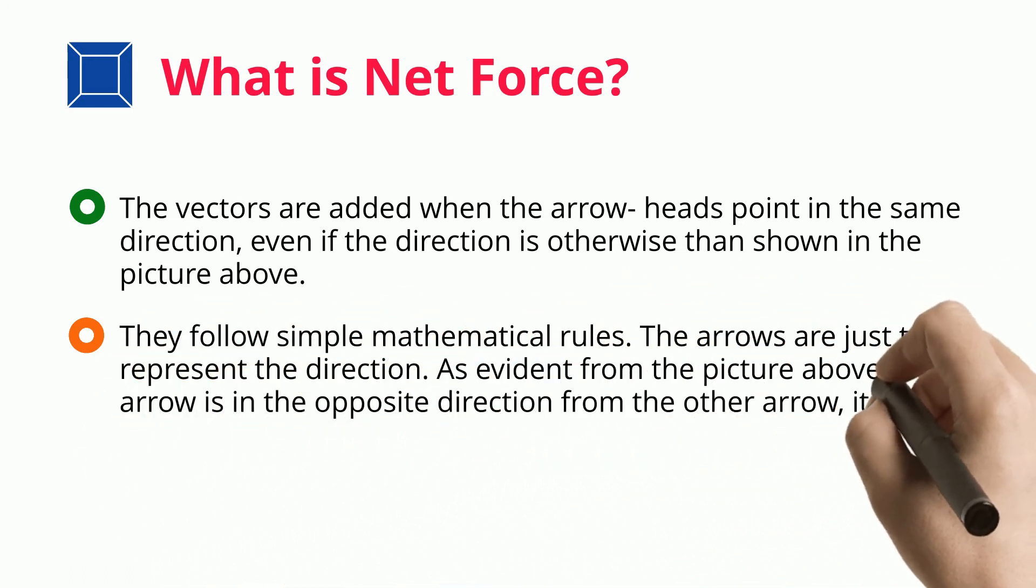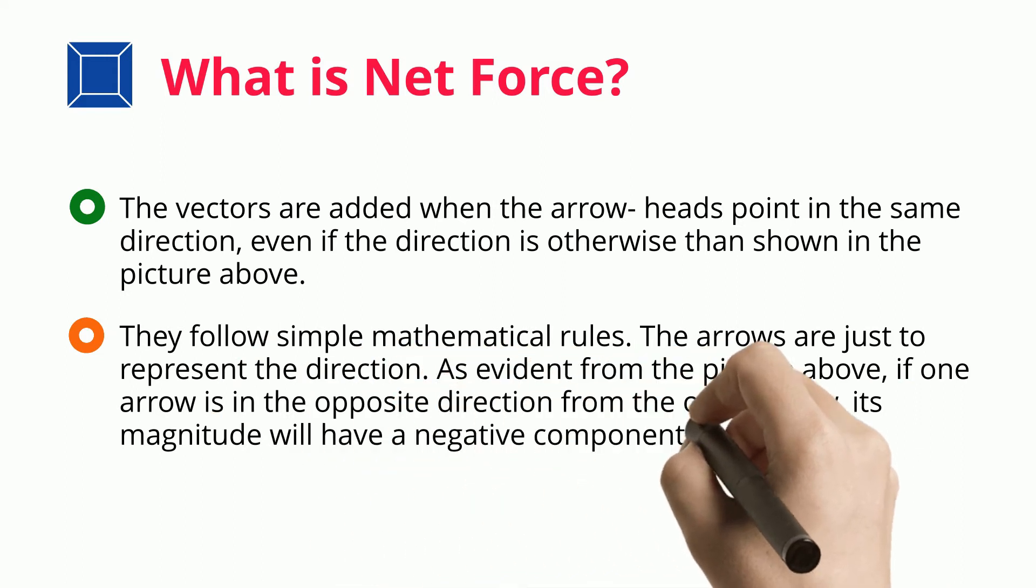As evident from the picture above, if one arrow is in the opposite direction from the other arrow, its magnitude will have a negative component.